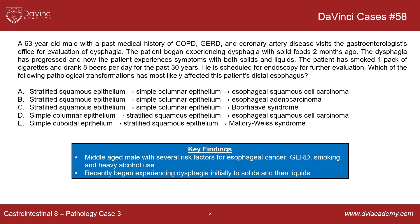GERD, which seems like a mild and very common thing, can actually put patients at risk for esophageal cancers if not treated adequately over a long period of time. And then smoking and heavy alcohol use puts you at risk for a number of cancers, especially GI cancers. The fact that he's experiencing dysphagia that has been continuing to get worse — initially starting with solids, and now occurring with both liquids and solids — is important.